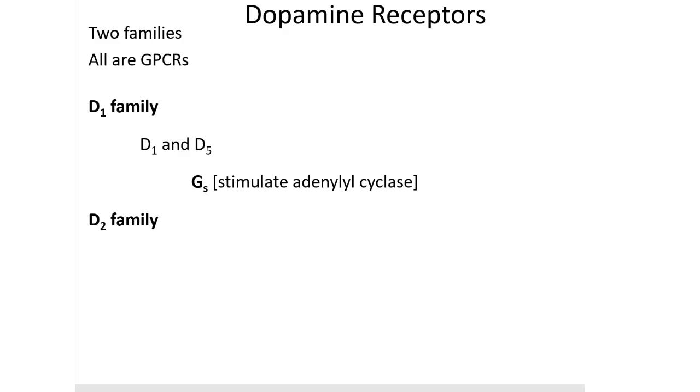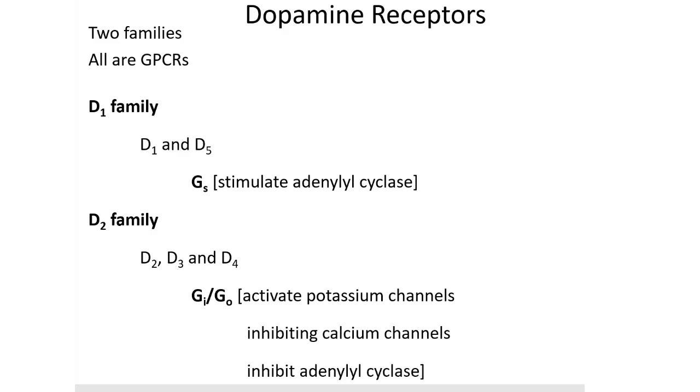Second is the D2 family which consists of D2, D3, and D4 receptors which are coupled to Gi and Go proteins. These activate potassium channels, inhibit calcium channels, and inhibit adenylyl cyclase thereby decreasing cyclic AMP.